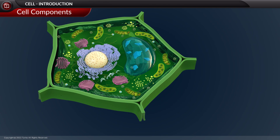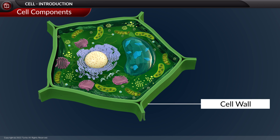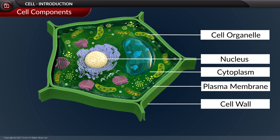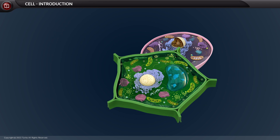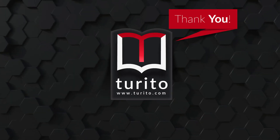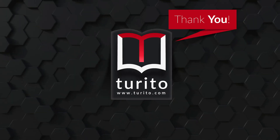The components of the cell include the cell wall, plasma membrane, nucleus, and cytoplasm with cell organelles. These are the brief points on the cell, its discovery, and its characteristics.